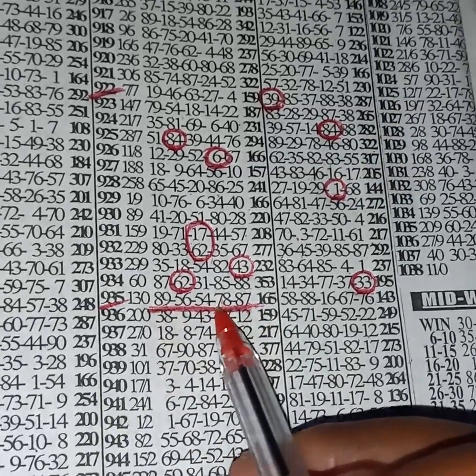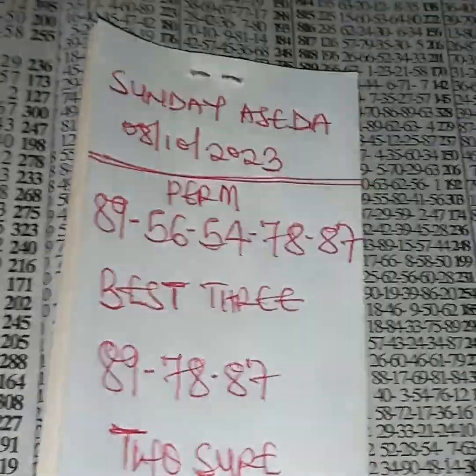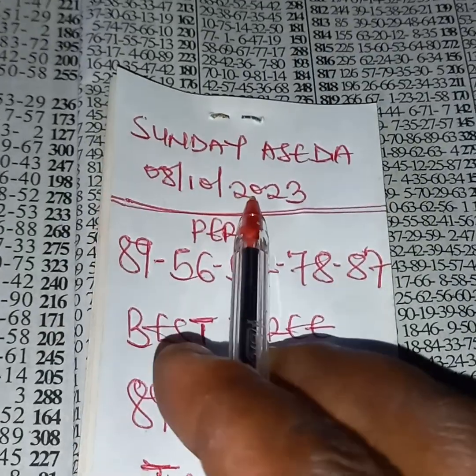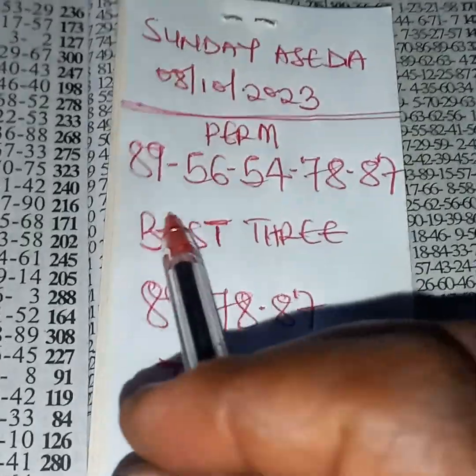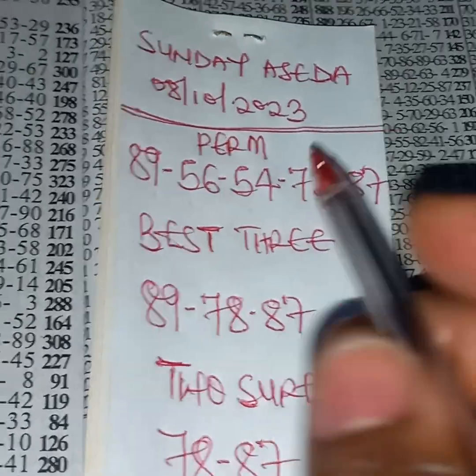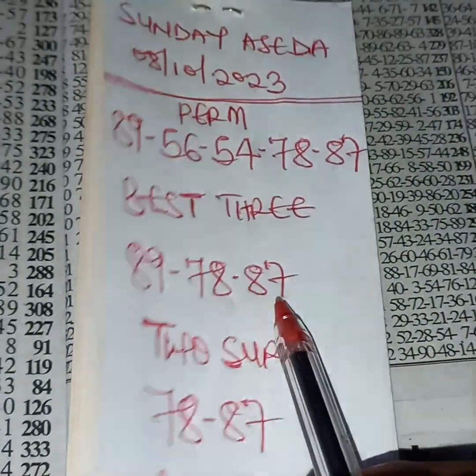After that we'll perm the event. Our banker is 78. Sunday, 8 October 2023, we are perming 89, 56, 54, 78, 87. Best trade is 89, 78, 87.